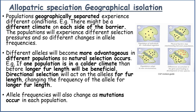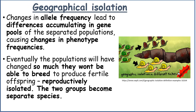Allele frequencies will also change as mutations occur in each population. Changes in allele frequency lead to differences accumulating in the gene pools of separated populations, causing changes in phenotype frequencies. Eventually the populations will have changed so much that they won't be able to breed to produce fertile offspring — they are reproductively isolated — and the two groups become separate species.